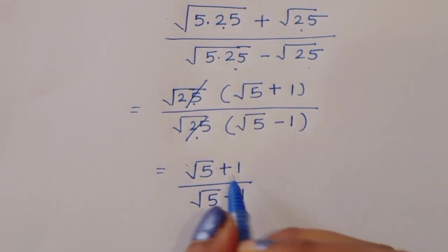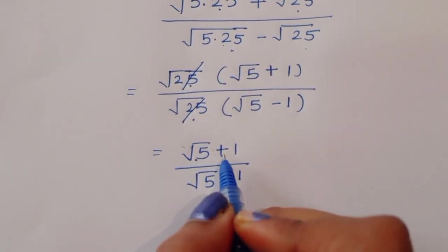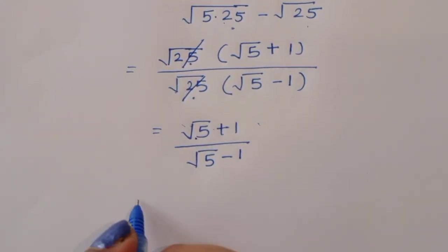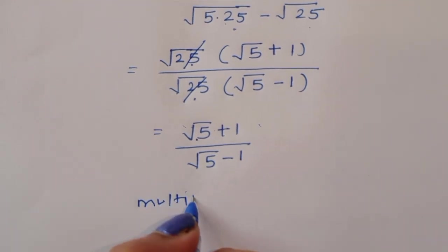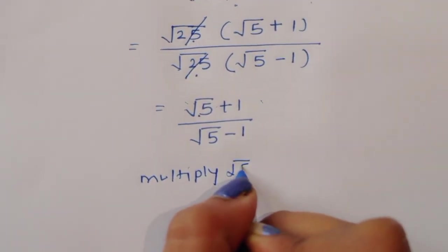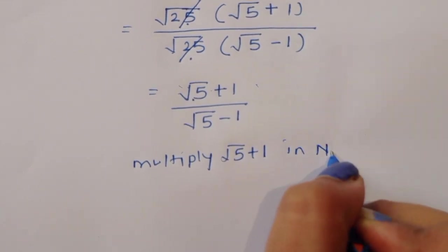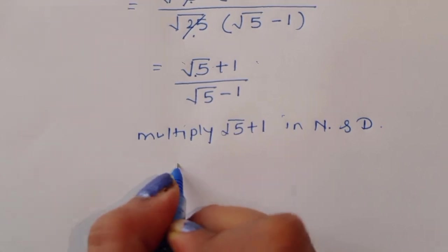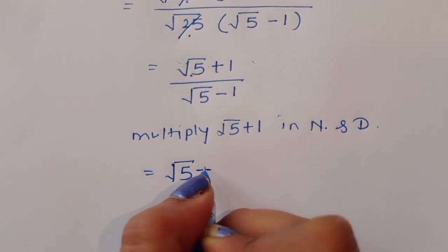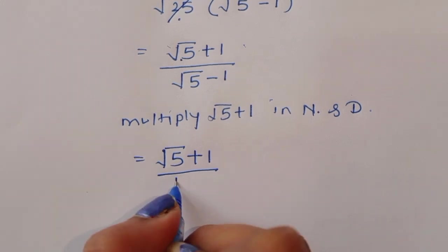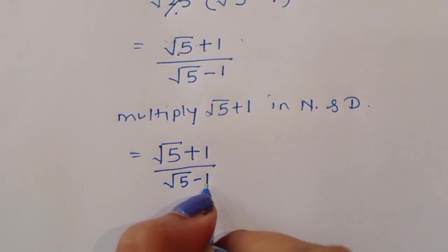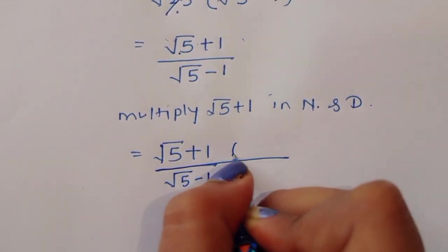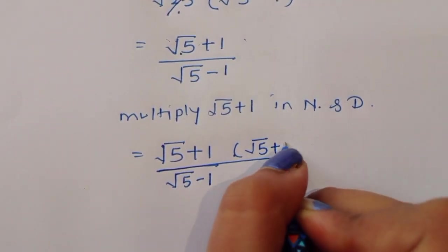Now we can multiply by square root of 5 plus 1 in both the numerator and denominator. So we have square root of 5 plus 1, times square root of 5 plus 1, divided by square root of 5 minus 1, times square root of 5 plus 1.